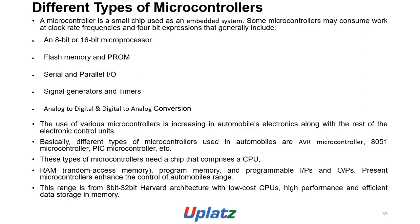Different types of microcontrollers include small microcontrollers which can be used as an energy system. Some microcontrollers have specific clock rates, frequencies, and 4-bit expressions that generally include an 8/16/26 microprocessor, flash memory and RAM, serial and parallel interfaces, and signature data. The use of various microcontrollers is increasing in automobiles and electronics, along with the rest of the electronic control units.